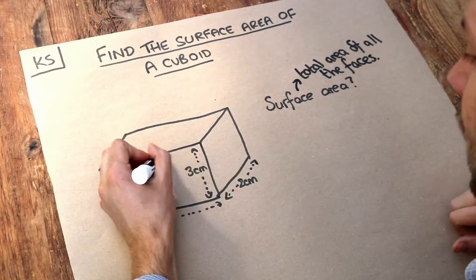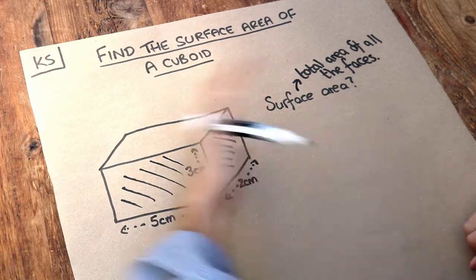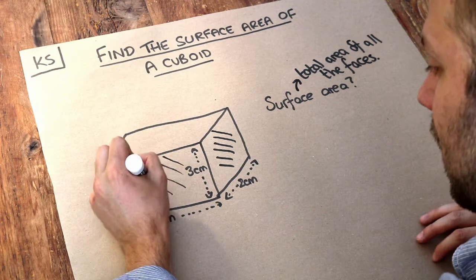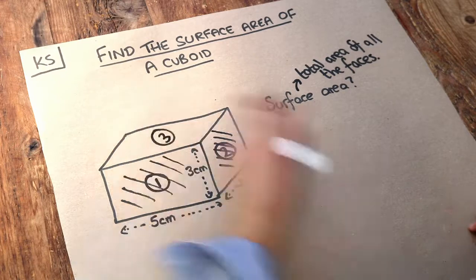So all we need to do is just find the area of each of these faces and then just add them up. So we could possibly number these if that's going to help. So this could be face 1, face 2, face 3.